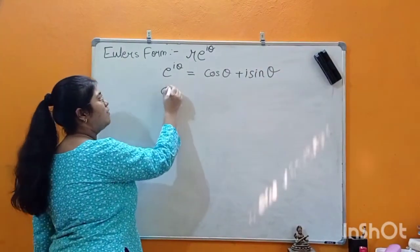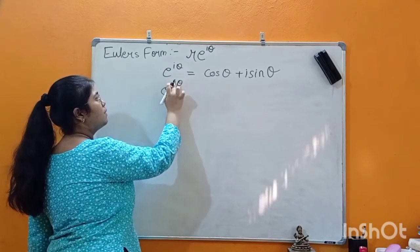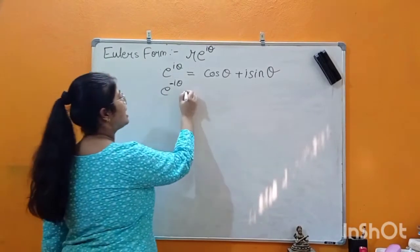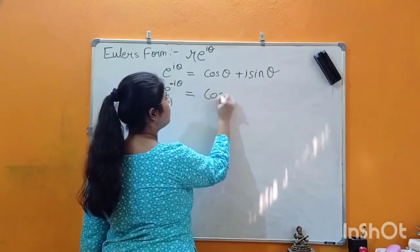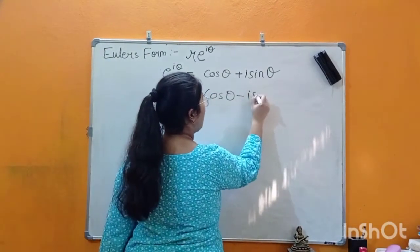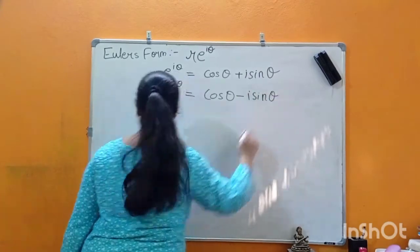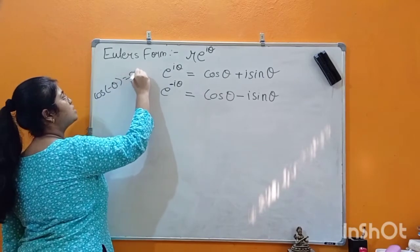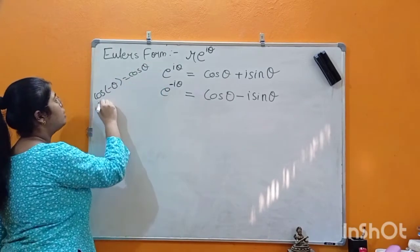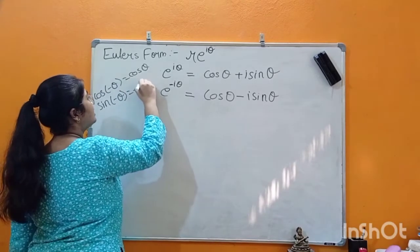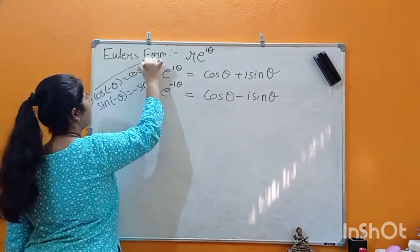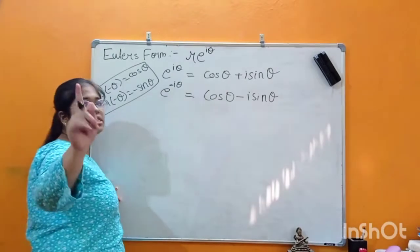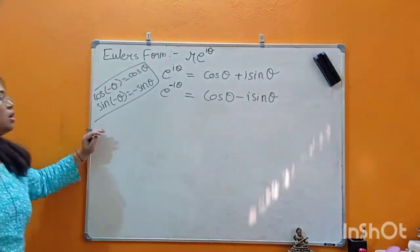Now if the power becomes negative — e^(-iθ) — then the value changes to cosθ − i·sinθ. This is because cos(−θ) = cosθ and sin(−θ) = −sinθ. If you don't know this, please watch the trigonometry video series.